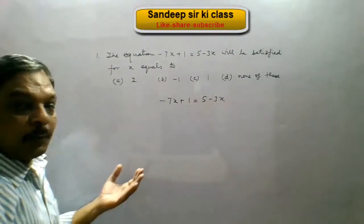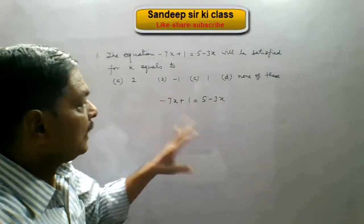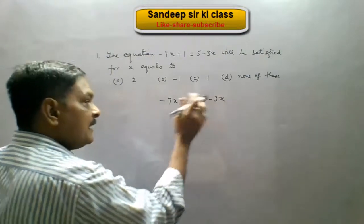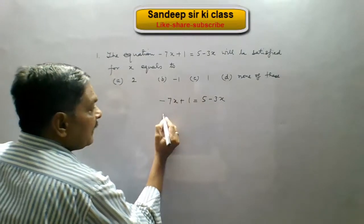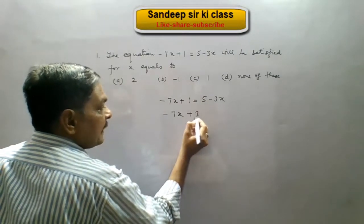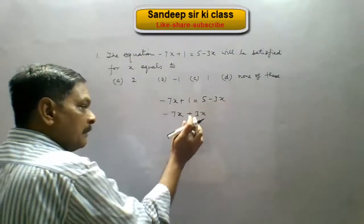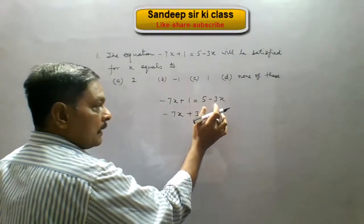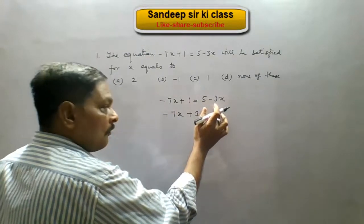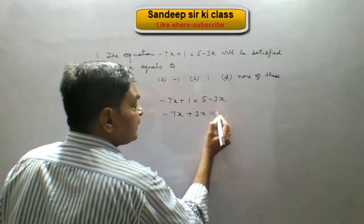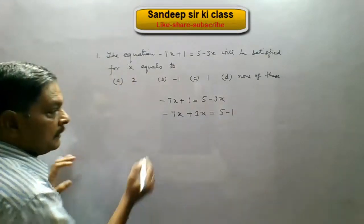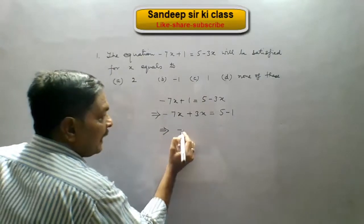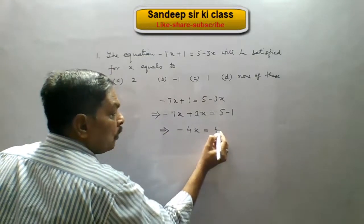Now transpose x on one side and the numbers on the other side. When we transpose minus 3x to the left hand side we get minus 7x plus 3x. This minus 3x becomes plus 3x, and when the number 1 goes to the right hand side it becomes of minus sign. So on the right hand side we get 5 minus 1.